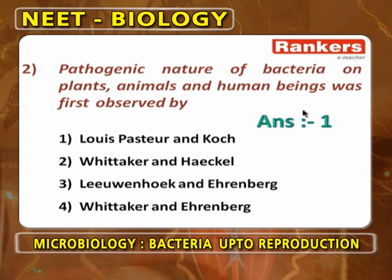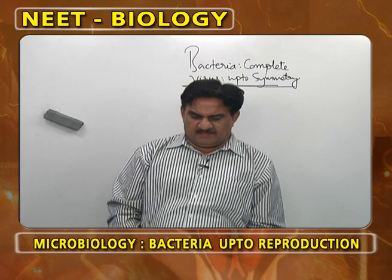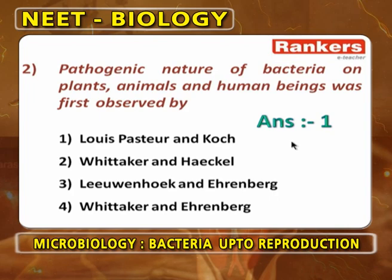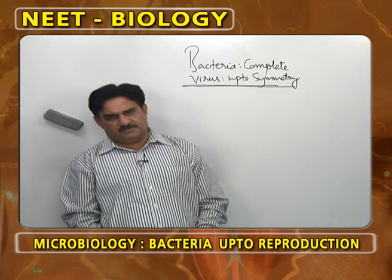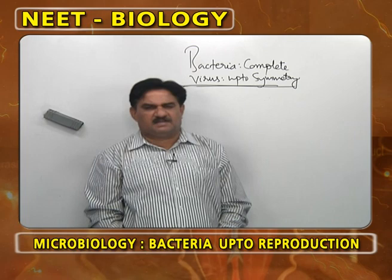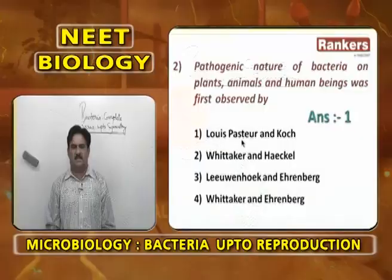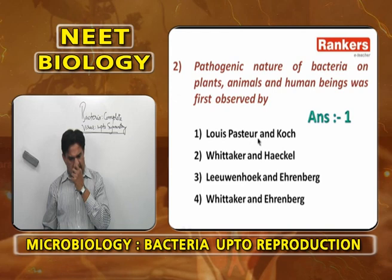Pathogenic nature of bacteria in plants, animals and human beings was first experimentally proved by Louis Pasteur and Koch — not Whittaker and Haeckel, not Leeuwenhoek and Ehrenberg. Louis Pasteur proposed that rabies from dog bites is caused by some organisms smaller than bacteria. Koch proposed postulates on how to culture a bacterium in the laboratory.